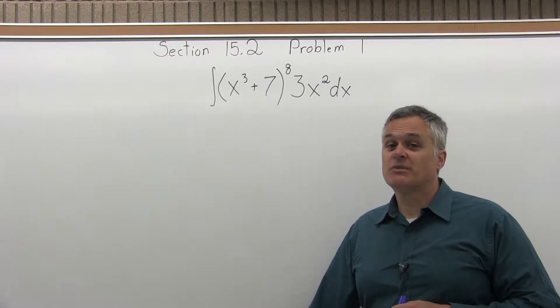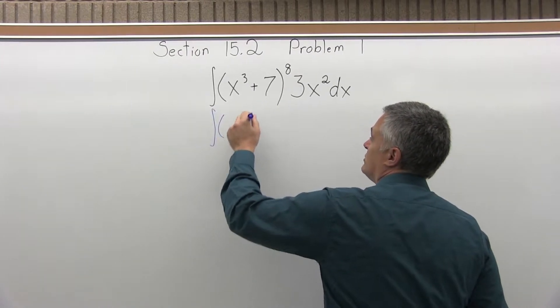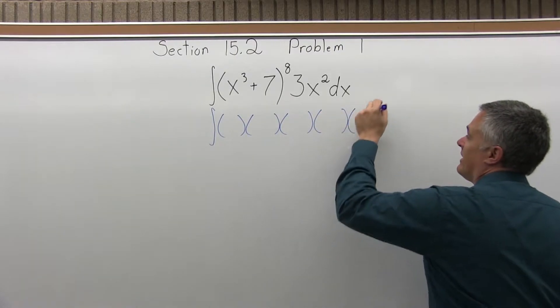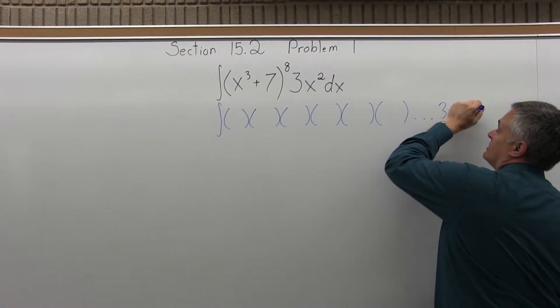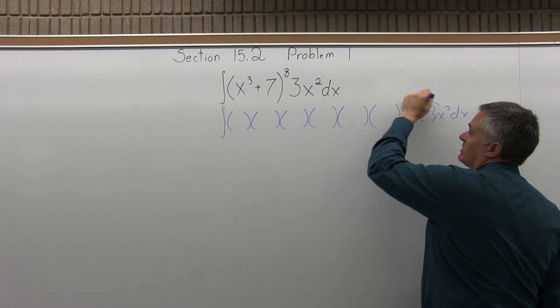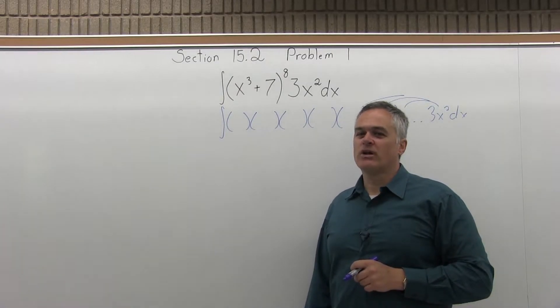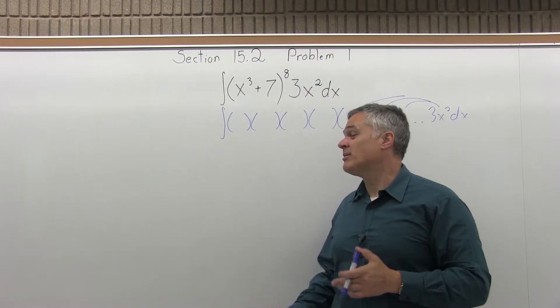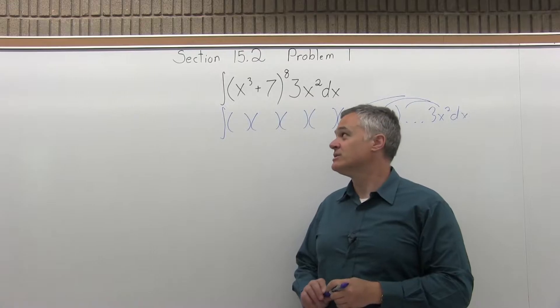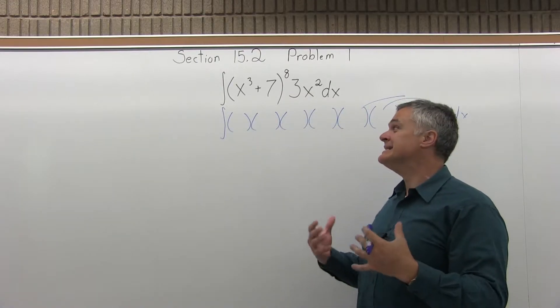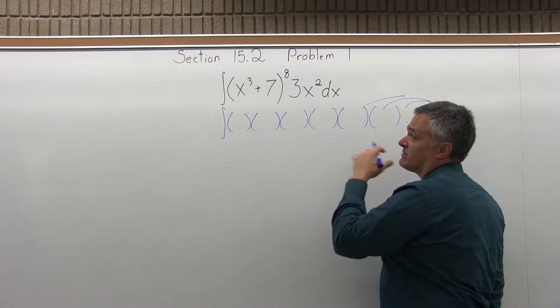So this is a problem for the substitution method. It can be done without the substitution method, but without it you would have to foil out 8 sets of parentheses and the 3x squared dx on the end. Do a lot of foiling, put the 3x squared dx into the result, a lot of combining of like terms. It'd be a long involved process and your probability of making a Calculus error just combining like terms would be pretty high. So this is very well suited for the substitution method. Again, it can be done without it with this big, long, complicated process, but substitution is way better.